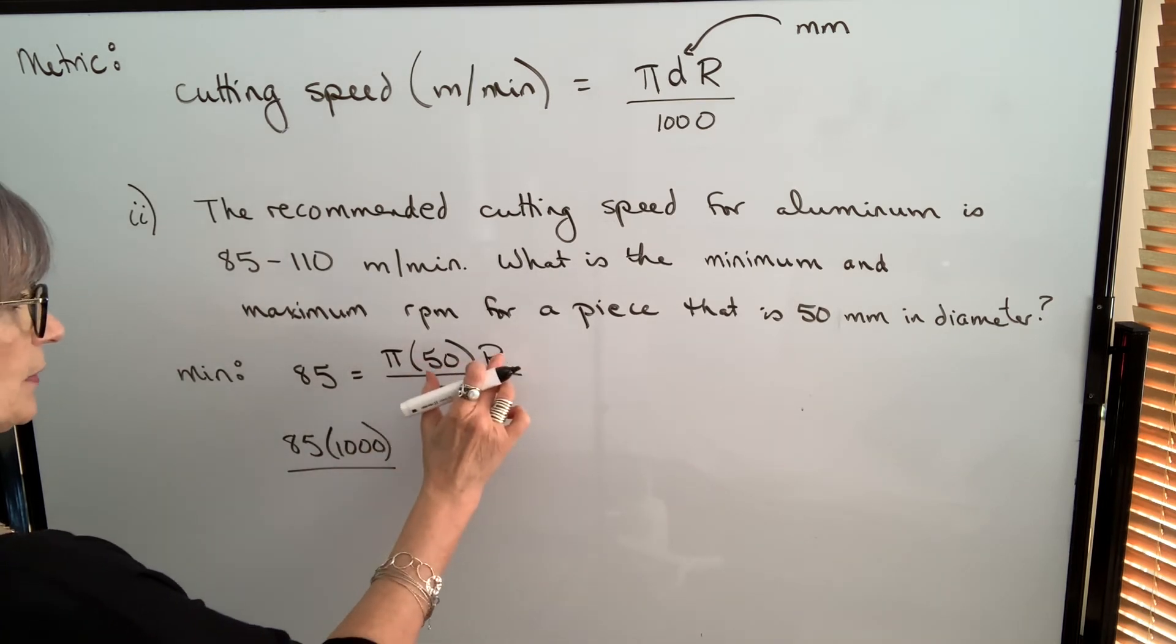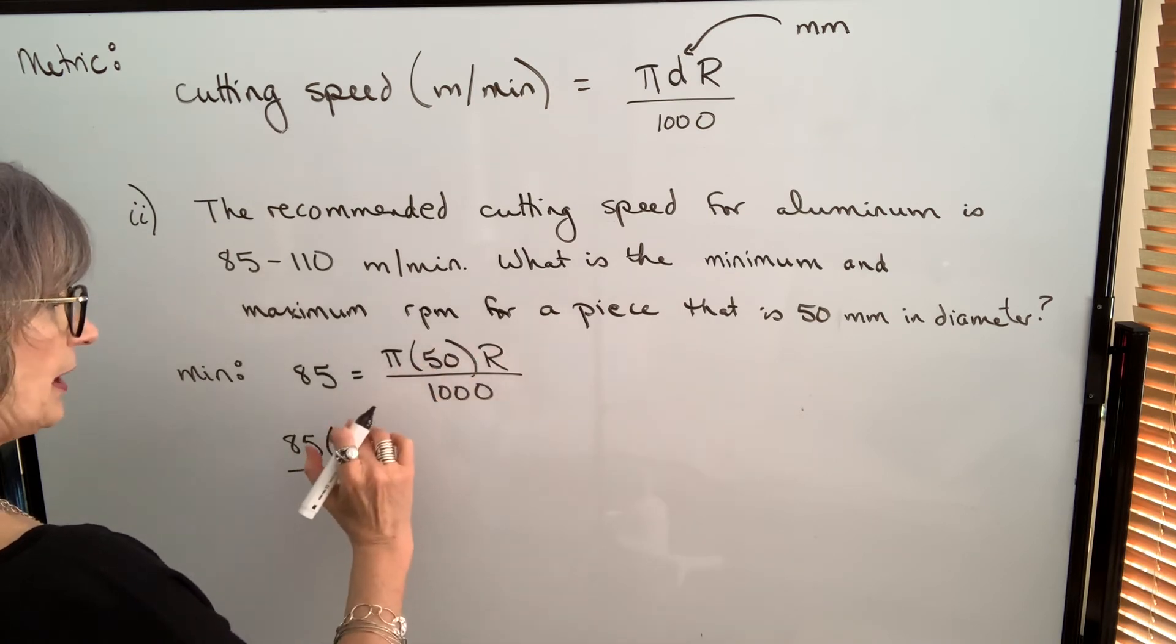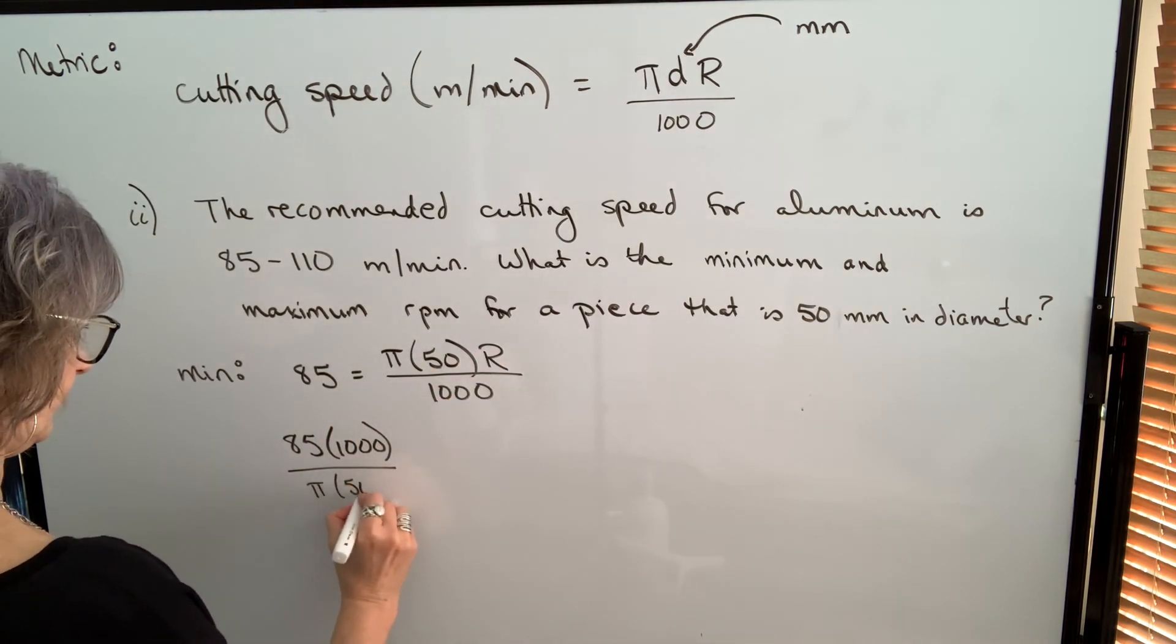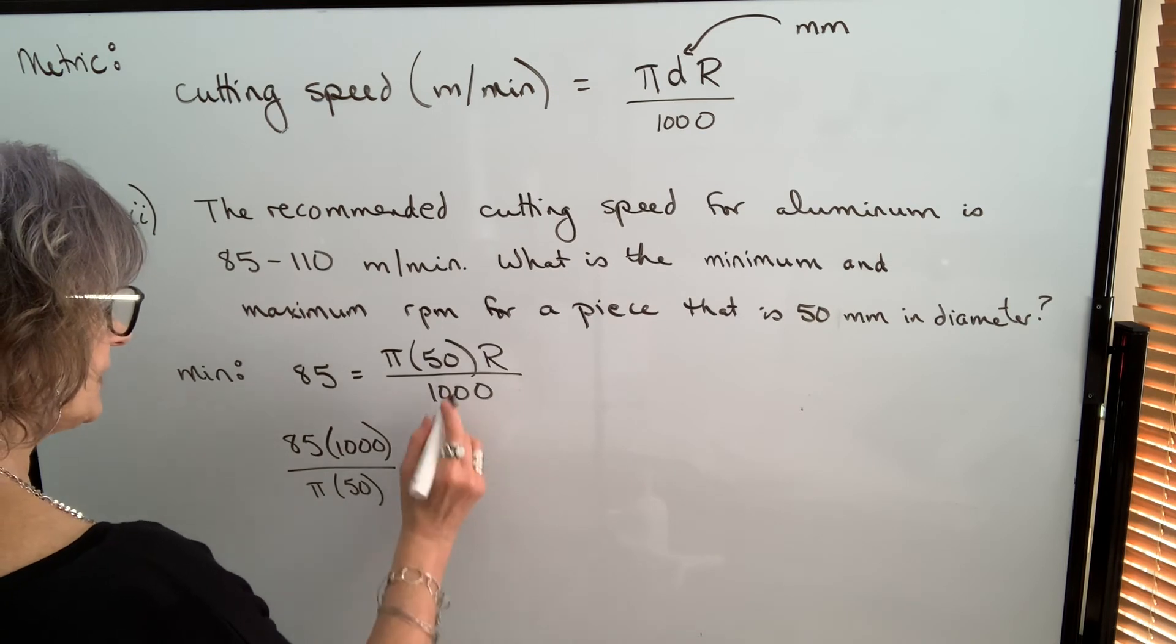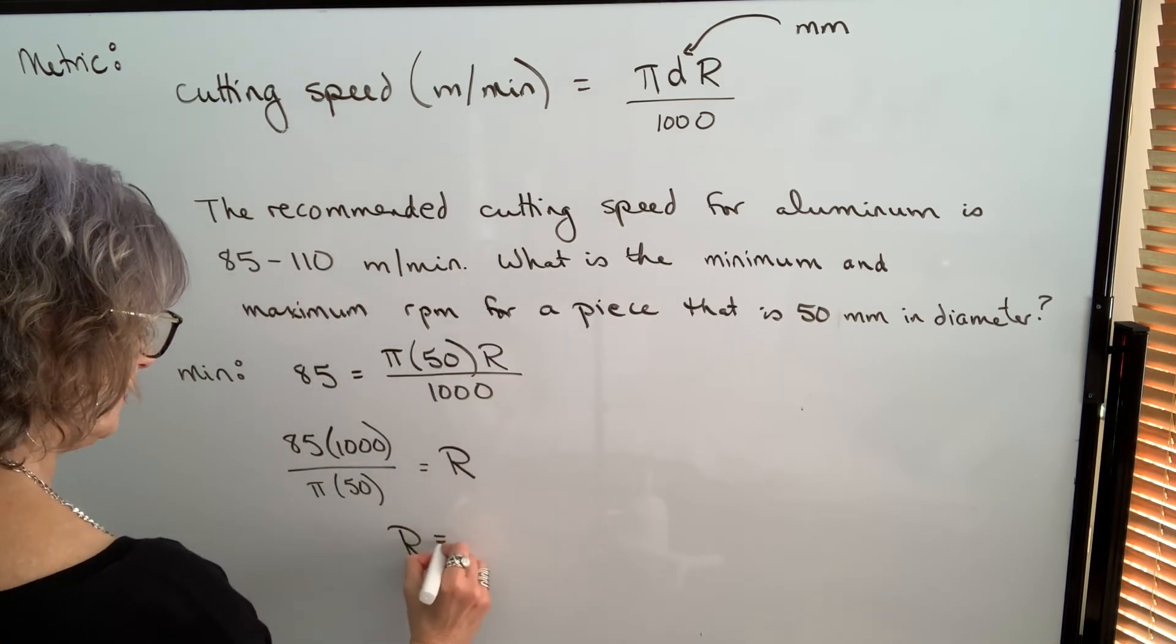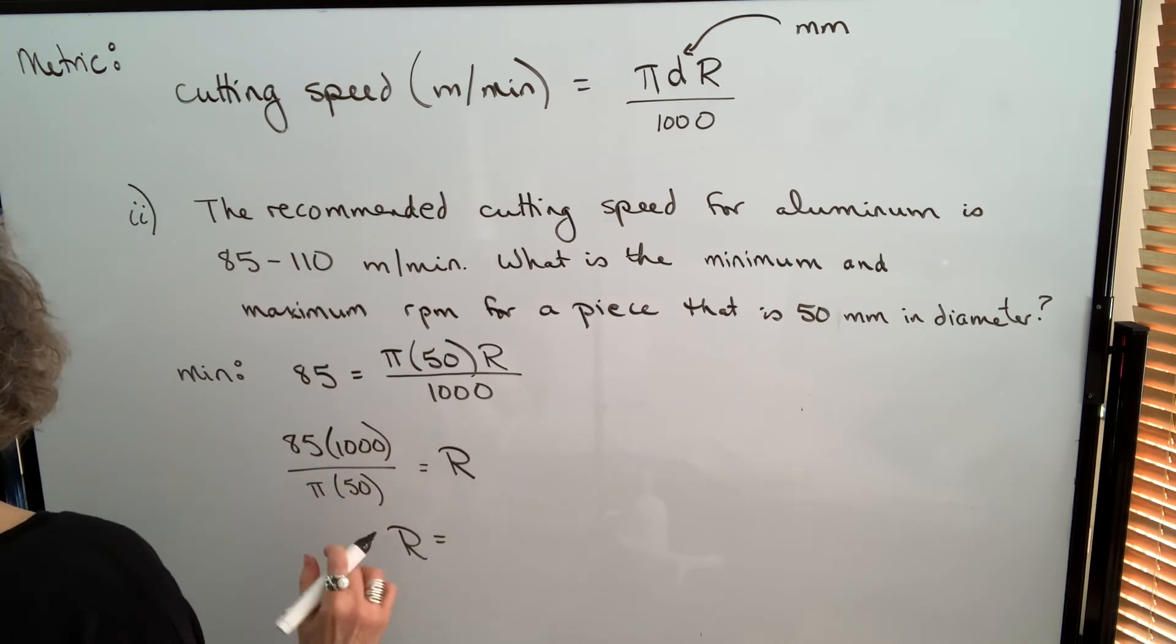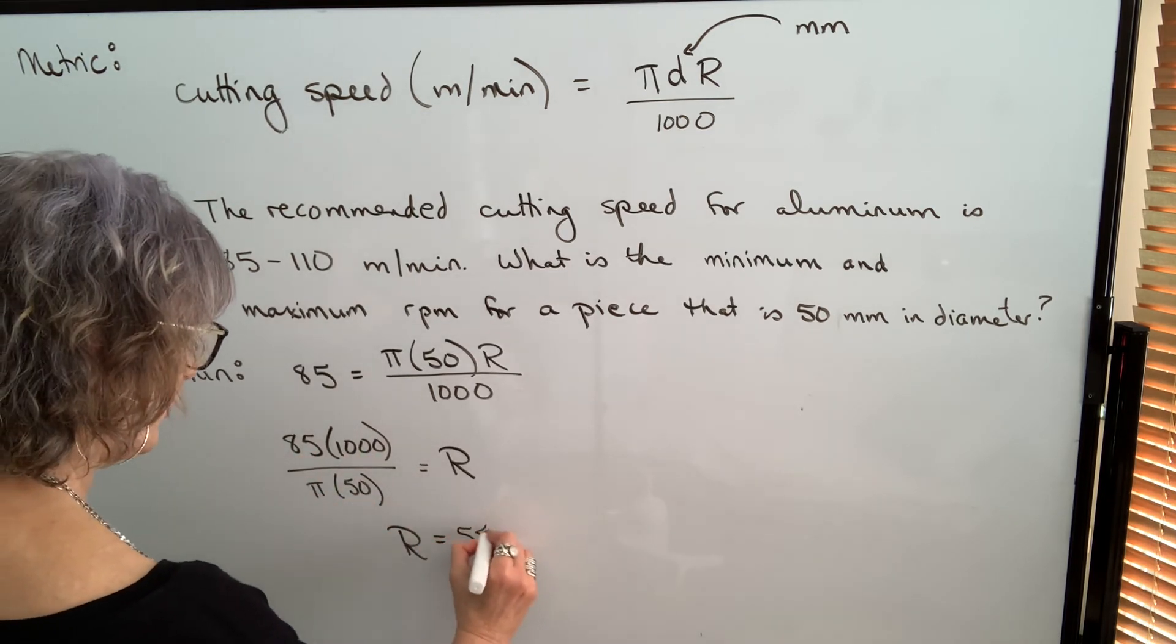π times 50 is multiplied to r, so I'm going to divide both sides by π times 50. And on this side, everything cancels except the r. When I do the calculation, when I take 85 times 1,000 and divide by π and divide by 50, I get 541 RPM.